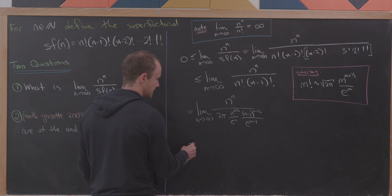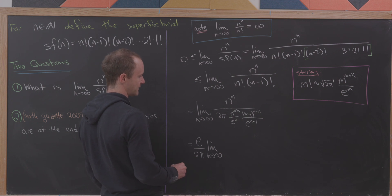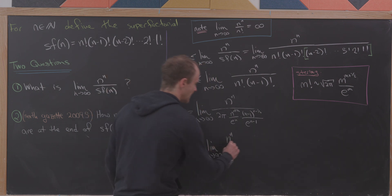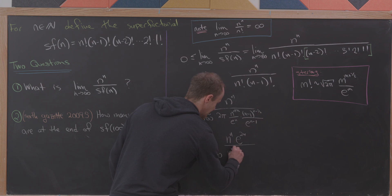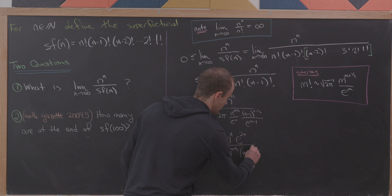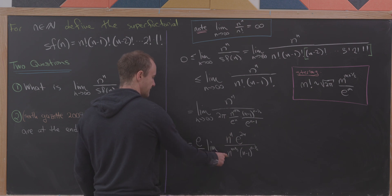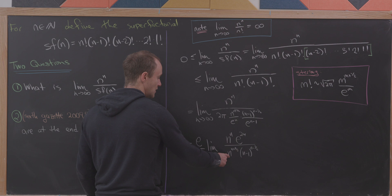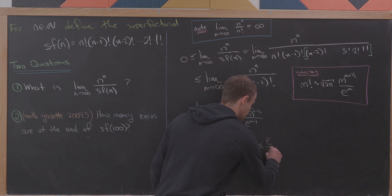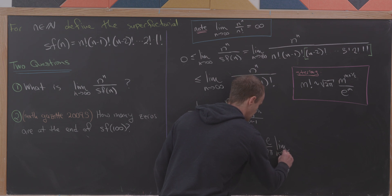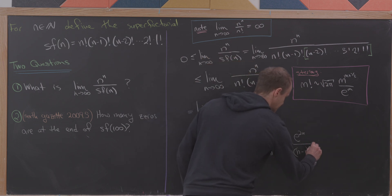Let's move some things around. We can bring e over 2π in front of the whole expression. After rewriting, we have n^n times e^(2n) in the numerator, and in the denominator n^(n+1/2) times (n−1)^(n−1/2). Now let's cancel n^n with n^n and n^(1/2) with (n−1)^(−1/2), building another inequality in the correct direction. We get: all of this is less than or equal to (e / 2π) times the limit as n → ∞ of e^(2n) over (n−1)^n.